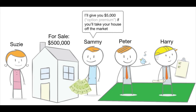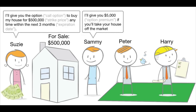Sammy decides to offer Susie $5,000 — the option premium — right now if she'll take the house off the market and give him a call option to buy the house for $500,000, which is the strike price, anytime within the next three months, which is the expiration date. If he does not elect to buy the house, Susie keeps the $5,000 premium and Sammy walks away. If he does exercise the option, Susie still keeps the $5,000 and he pays her $500,000.